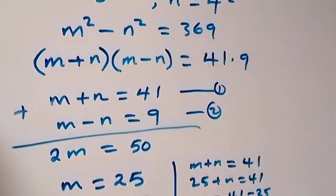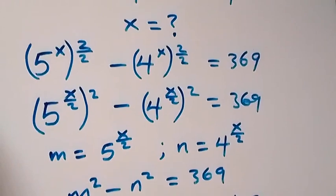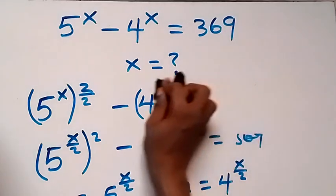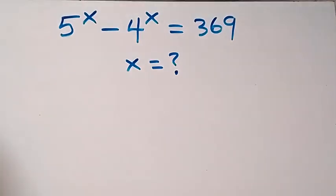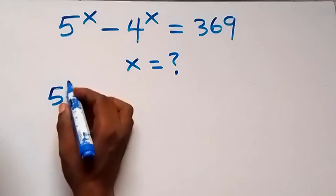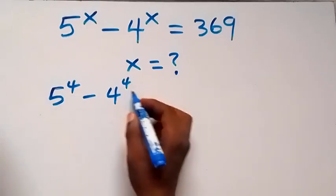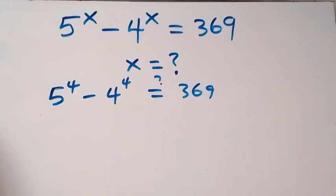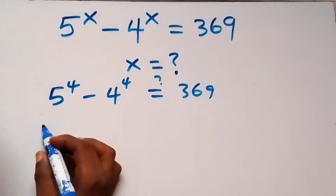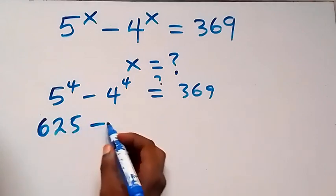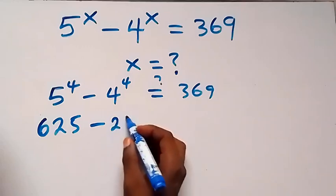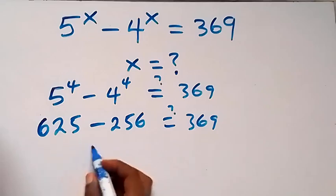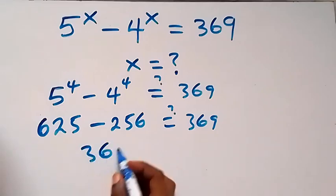To verify, we substitute x equals 4 back into the original problem: 5 raised to power 4 minus 4 raised to power 4 should equal 369. We have 5 to the power 4 equals 625, and 4 to the power 4 equals 256. So 625 minus 256 equals 369, which checks out.